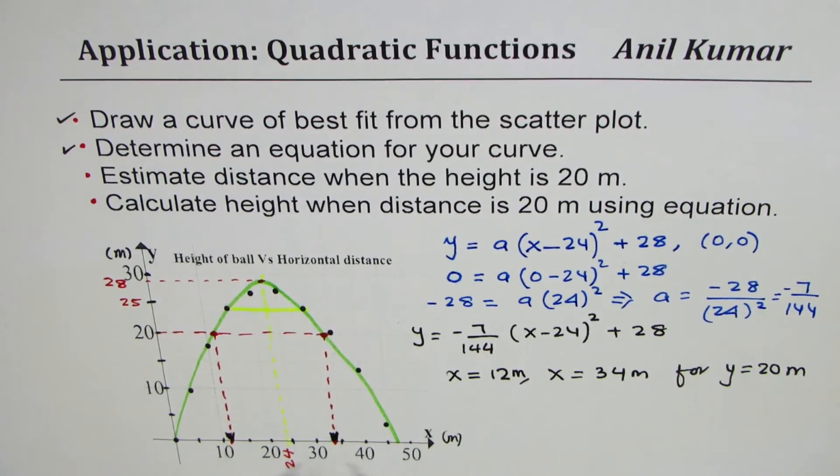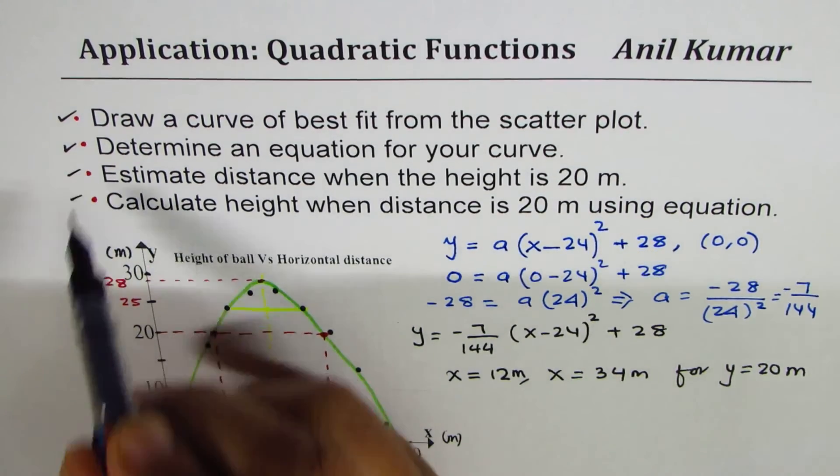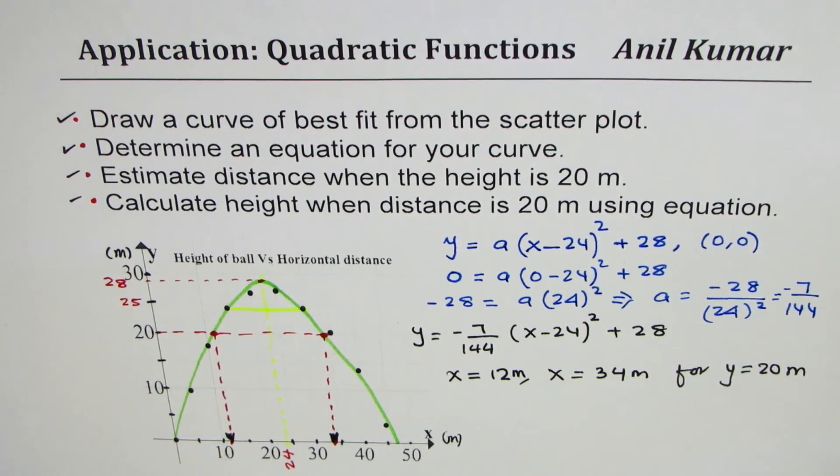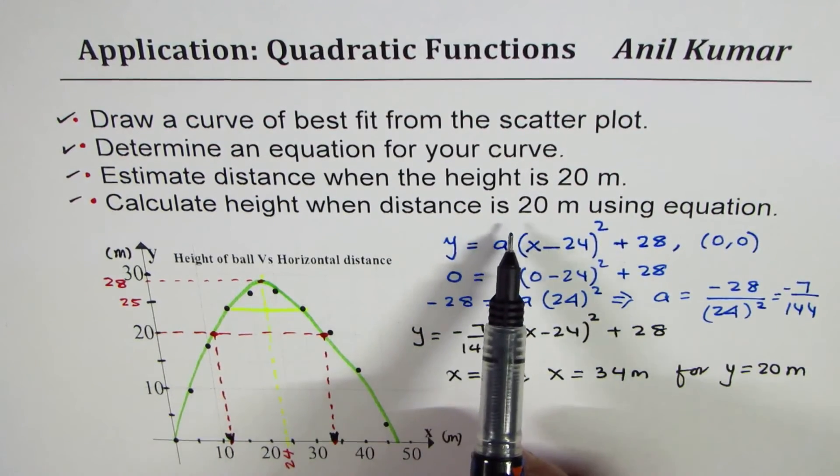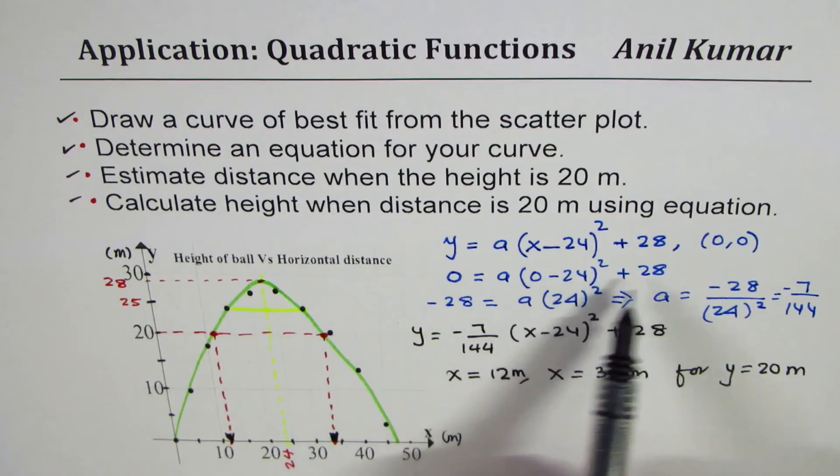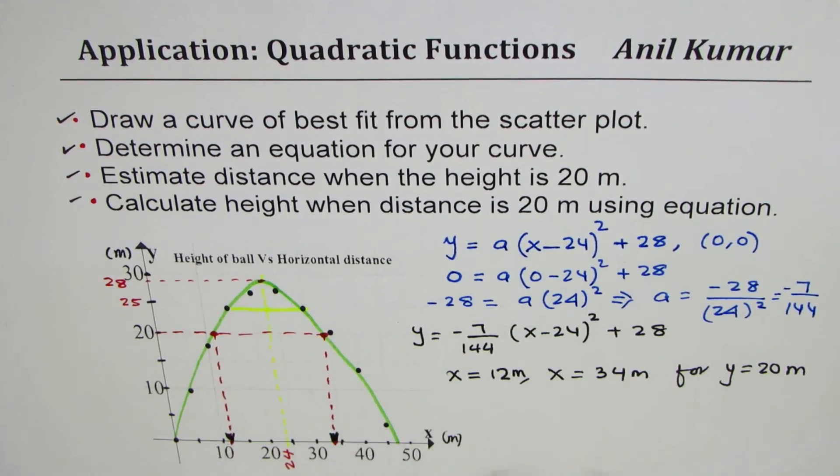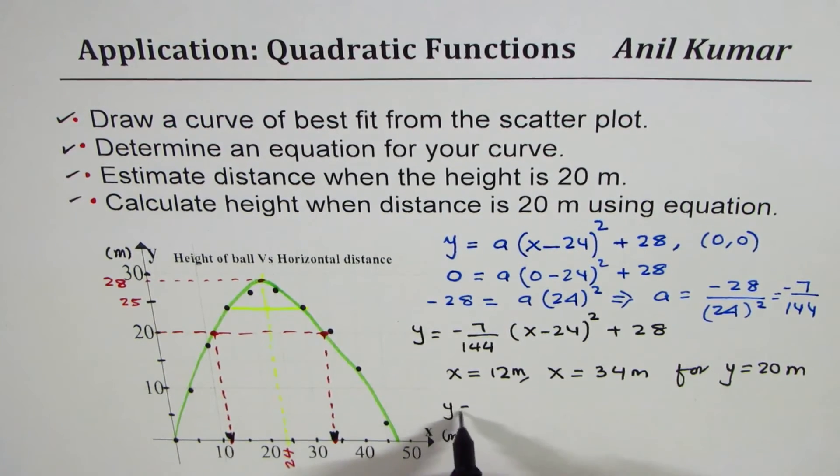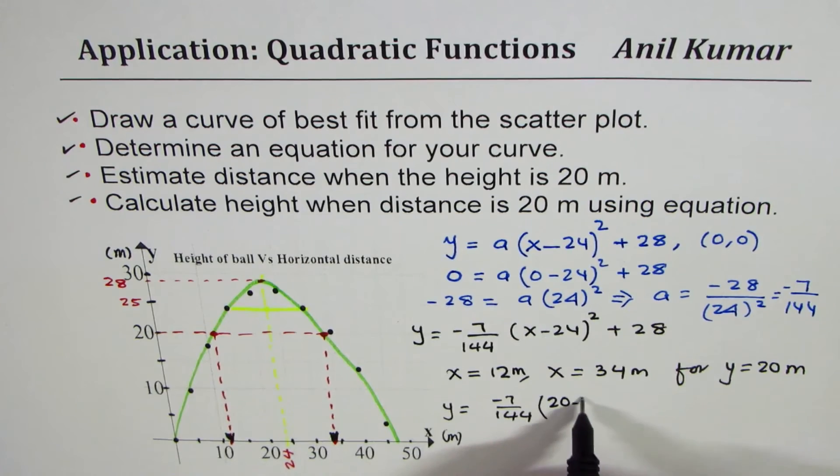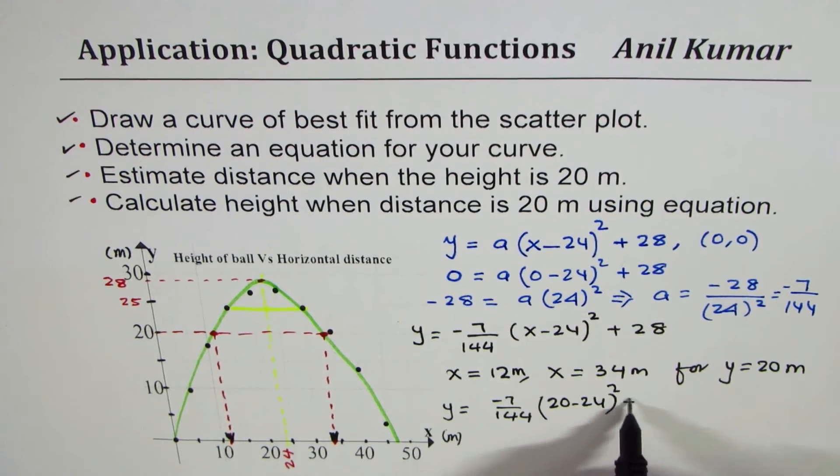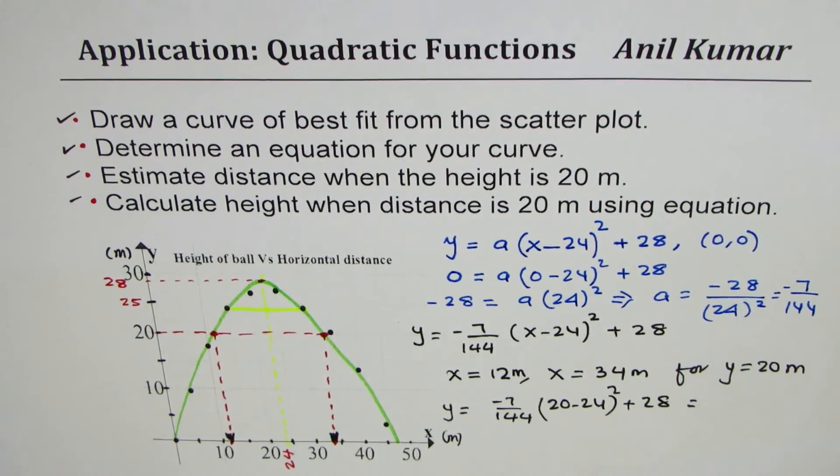We've done this part and the last part here is to calculate height when the distance is 20 meters. Let's use this equation. y is the height so we say y = -7/144(20 - 24)² + 28.